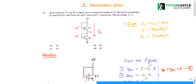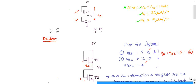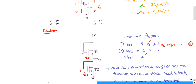The given information: the threshold voltage of the first and second transistors is 1 volt. k1 of the first transistor is 36 and k2 is 9. Now let us interpret more from the given figure.